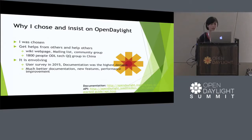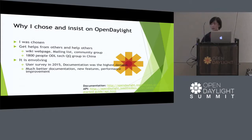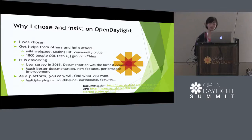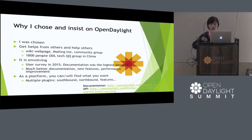As you remember, the first release, Hydrogen — it was hard to push a flow table into the switch. The consistency between the config data store and the operational data store was hard to achieve. But just a few days ago, I tried it on the Beryllium release and it works quite well. And the last point I want to make is that as a platform, you can find — or at least you will find — what you want. The multiple plugins, especially the southbound plugins, reduce the extra work of protocol realization, which is really great for me.